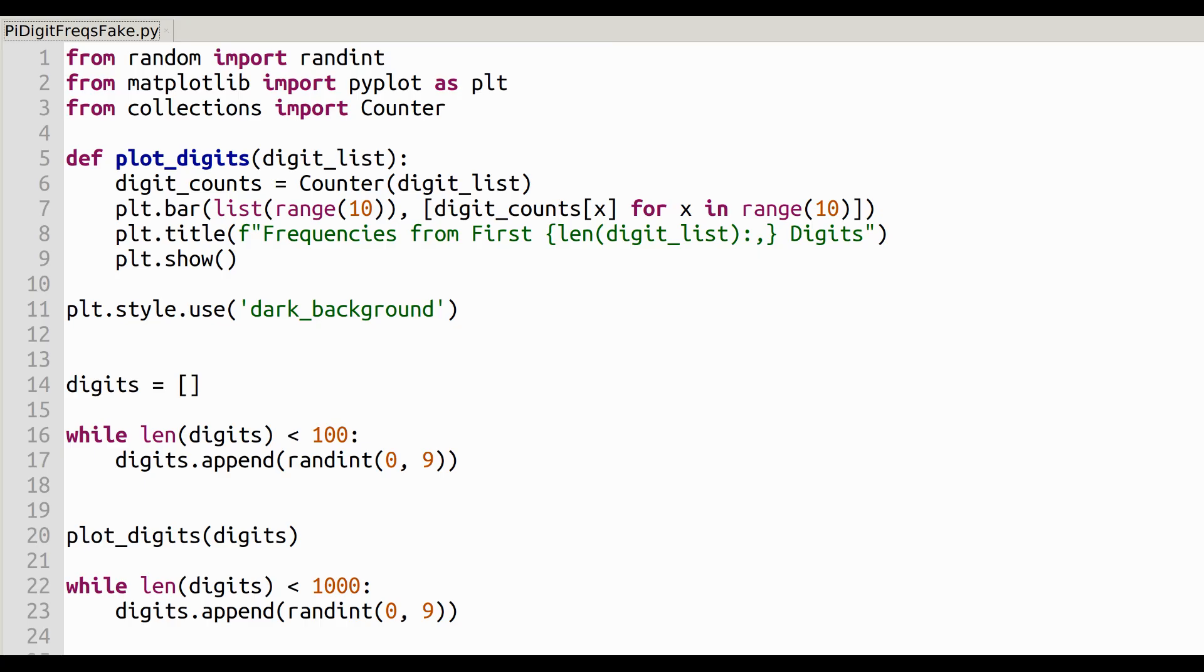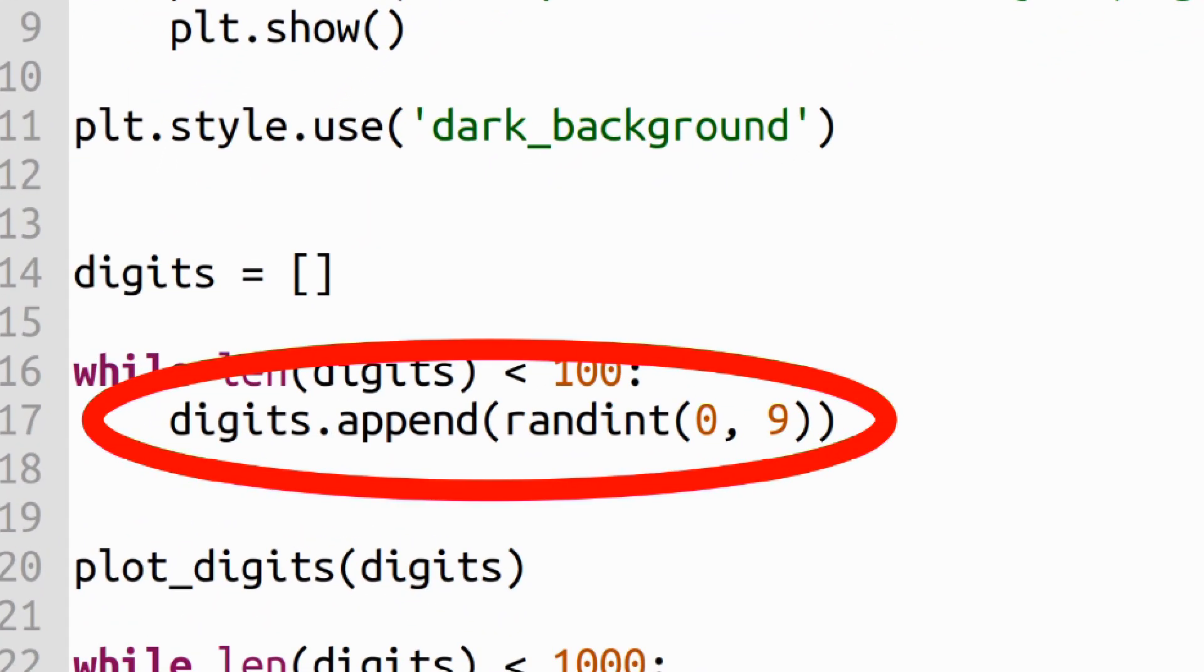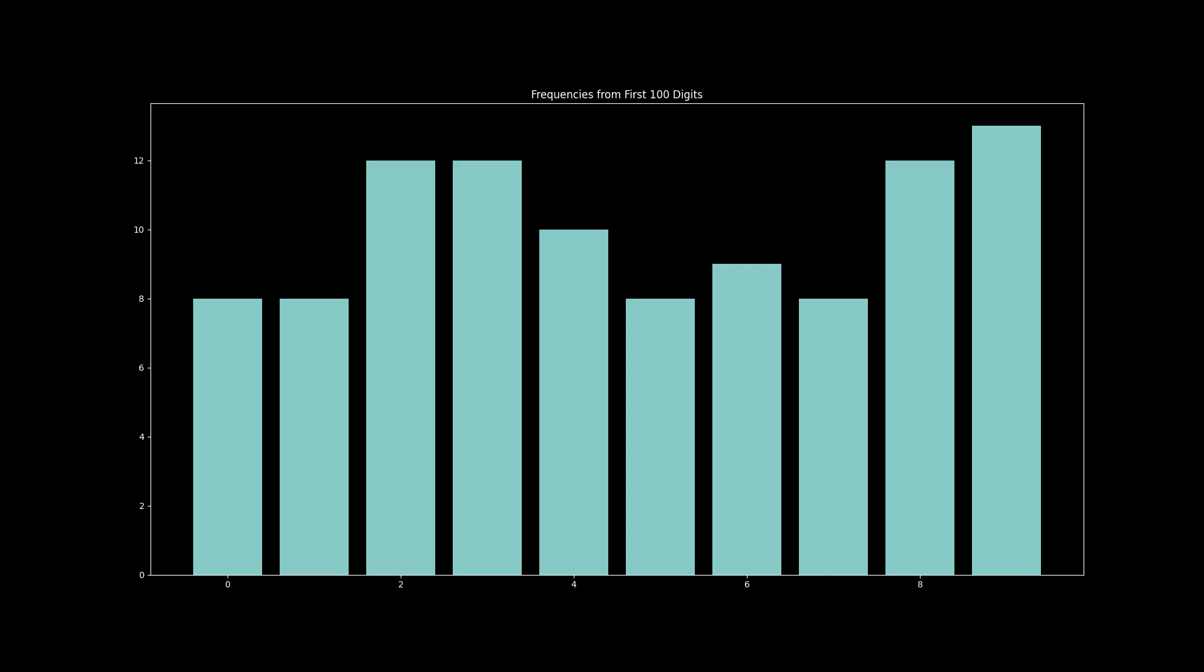Well, I'm afraid I lied again. Those weren't the frequencies for the digits of pi. Those were the frequencies for a randomly generated sequence of digits. Here are the frequencies for the real digits of pi.